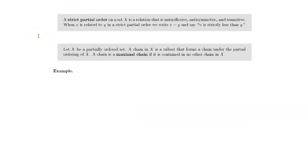A strict partial order on a set X is a relation that is anti-reflexive, anti-symmetric, and transitive. The idea is that we're thinking of the relation X being strictly less than Y on the set of numbers. When X is a partially ordered set, a chain in X is a subset that forms a chain under the partial ordering of X. A maximal chain is a chain that is a subset of no other chain in X.